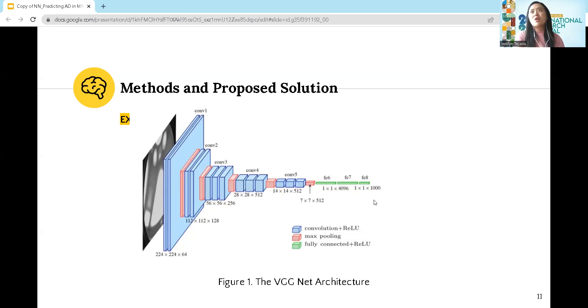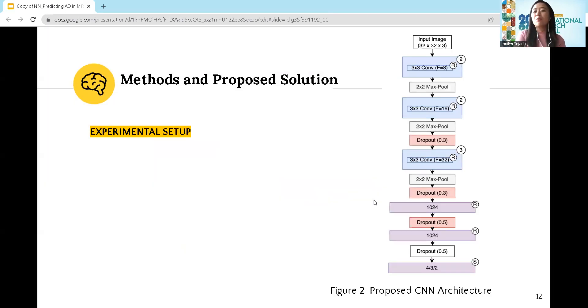This architecture requires an input image size of 224 by 224 by 3, producing total parameters of around 133 to 144 million. To save computational space, I decided to downsize the input size to 32 by 32 by 3, as depicted in this illustration.